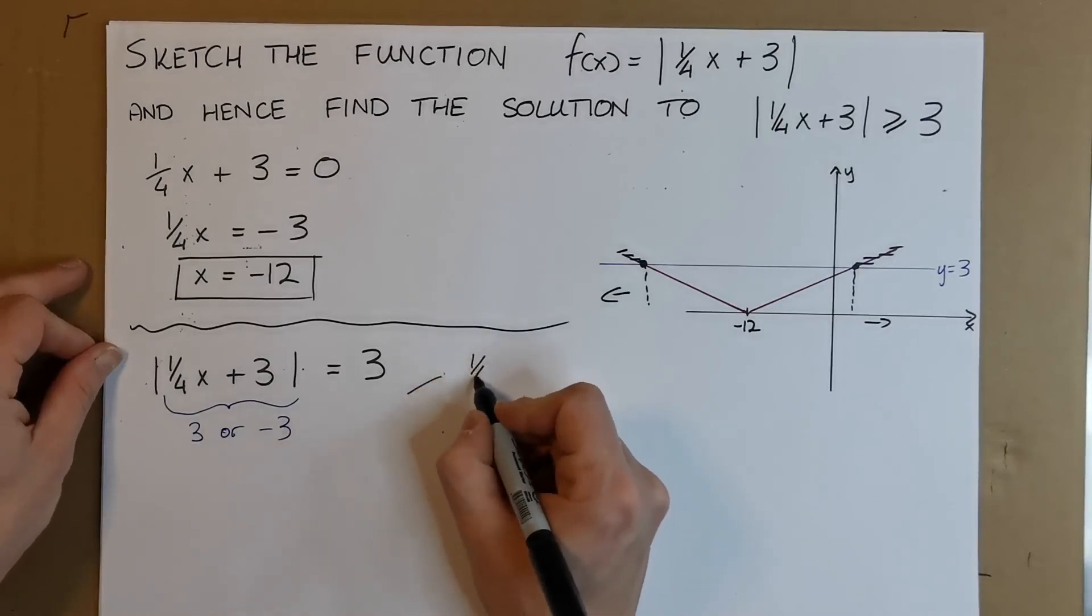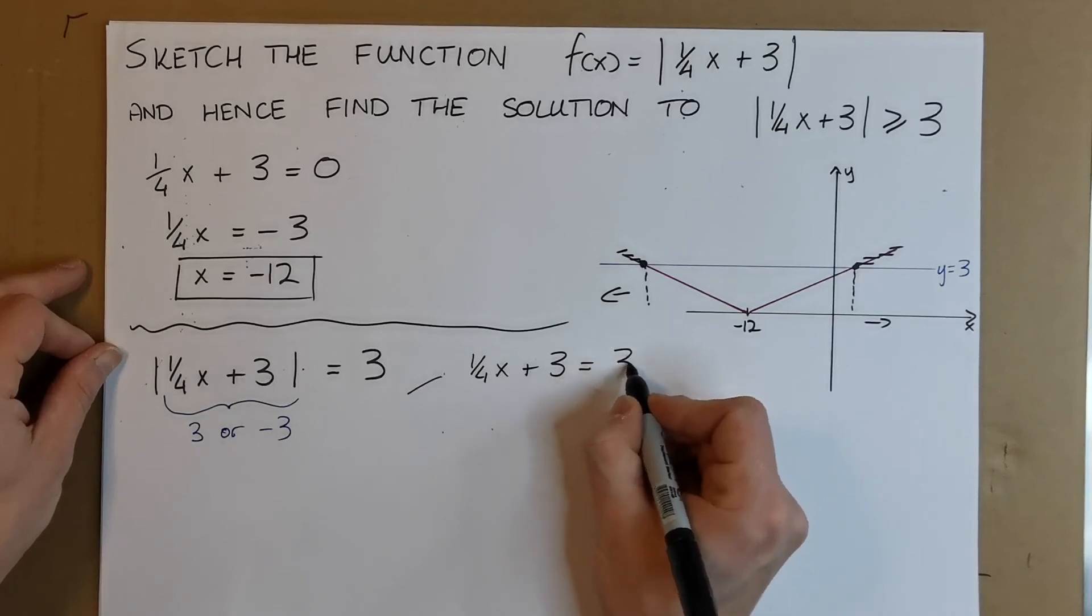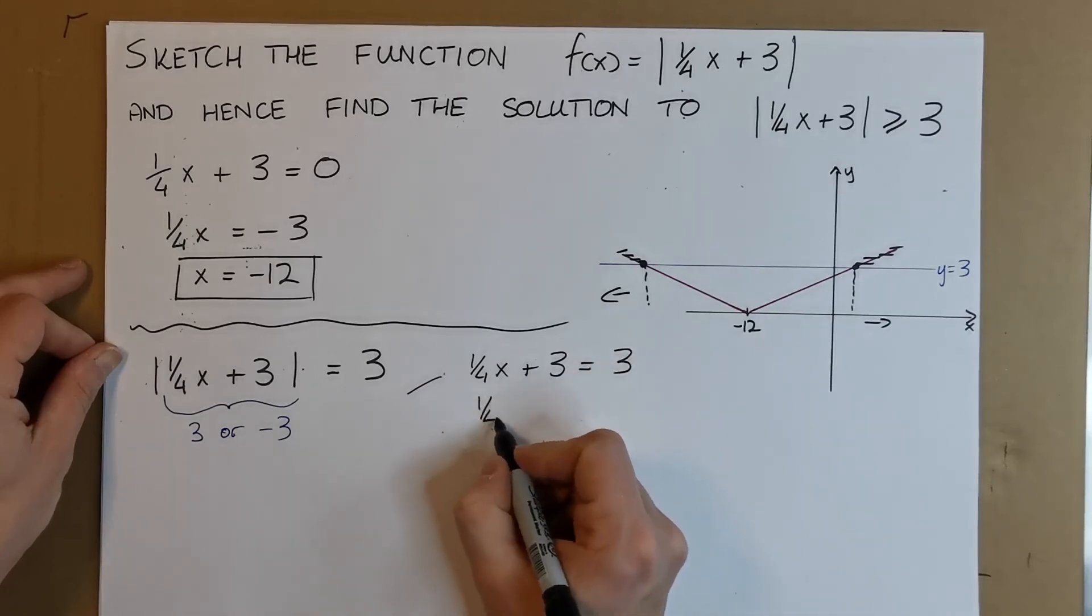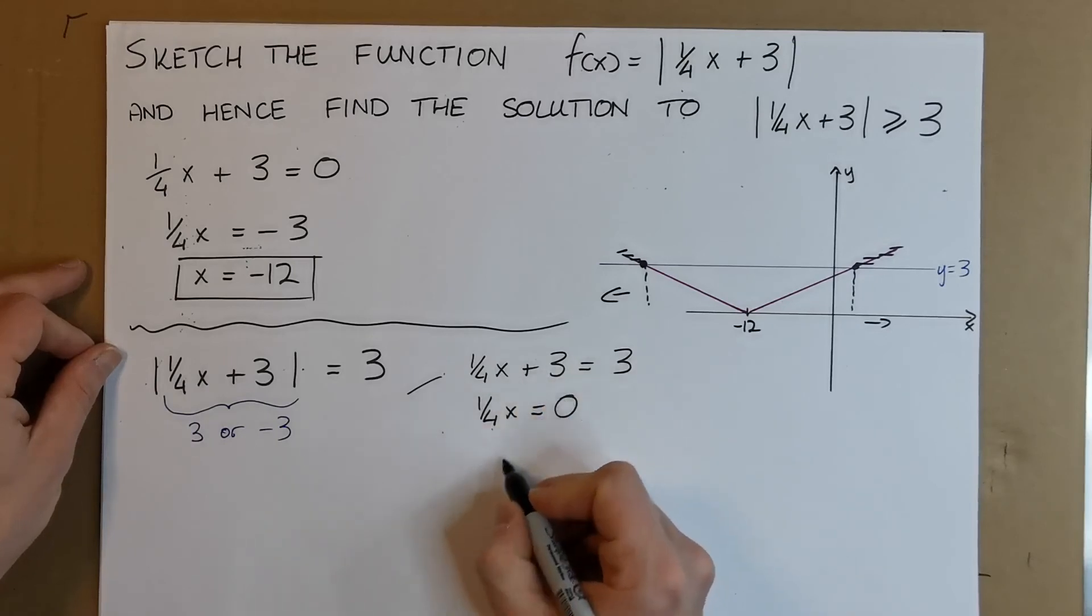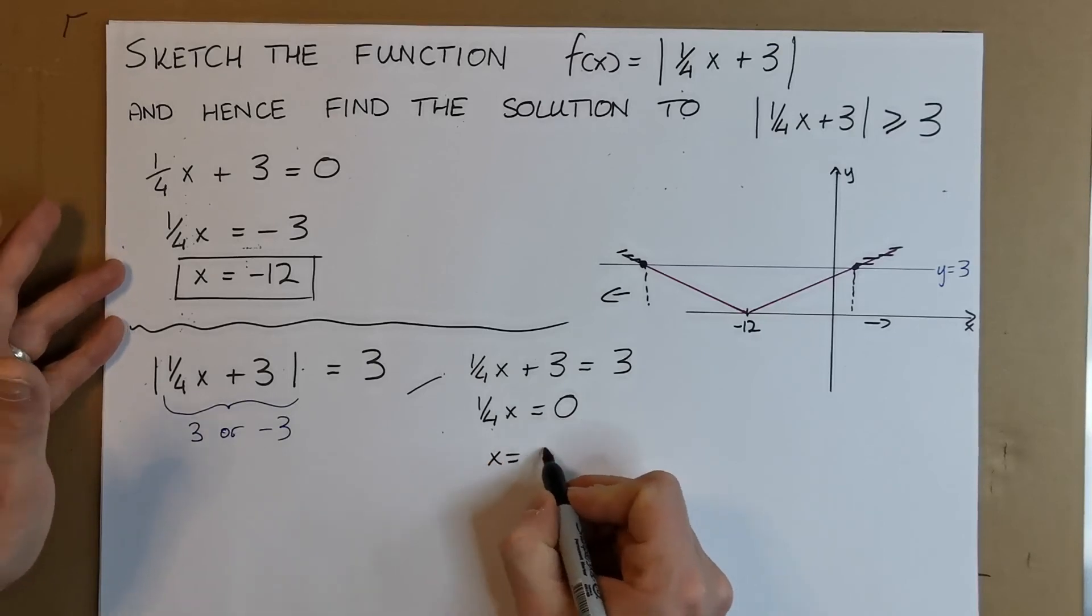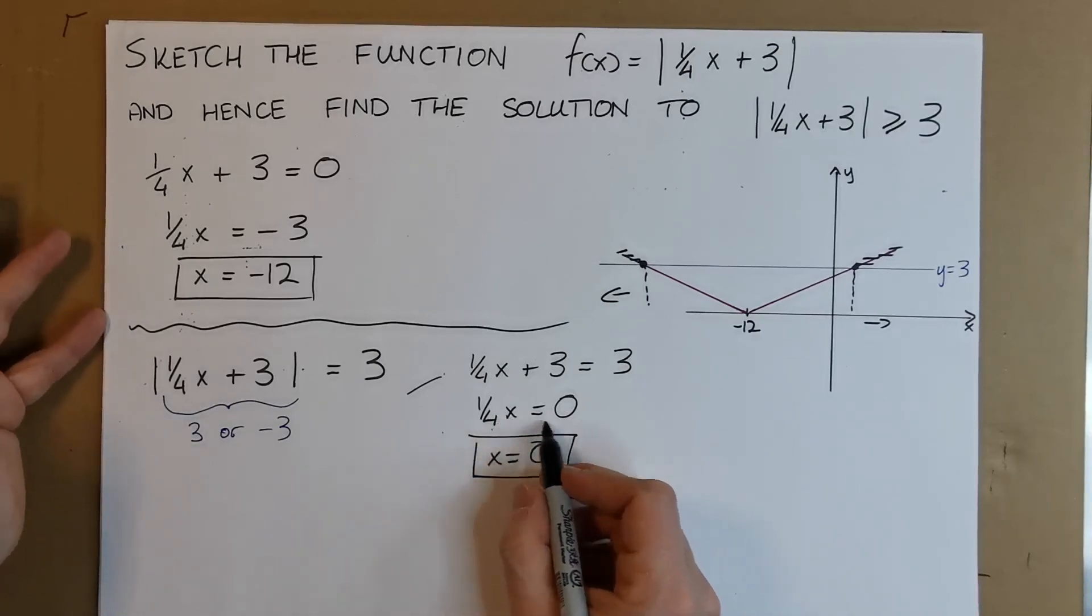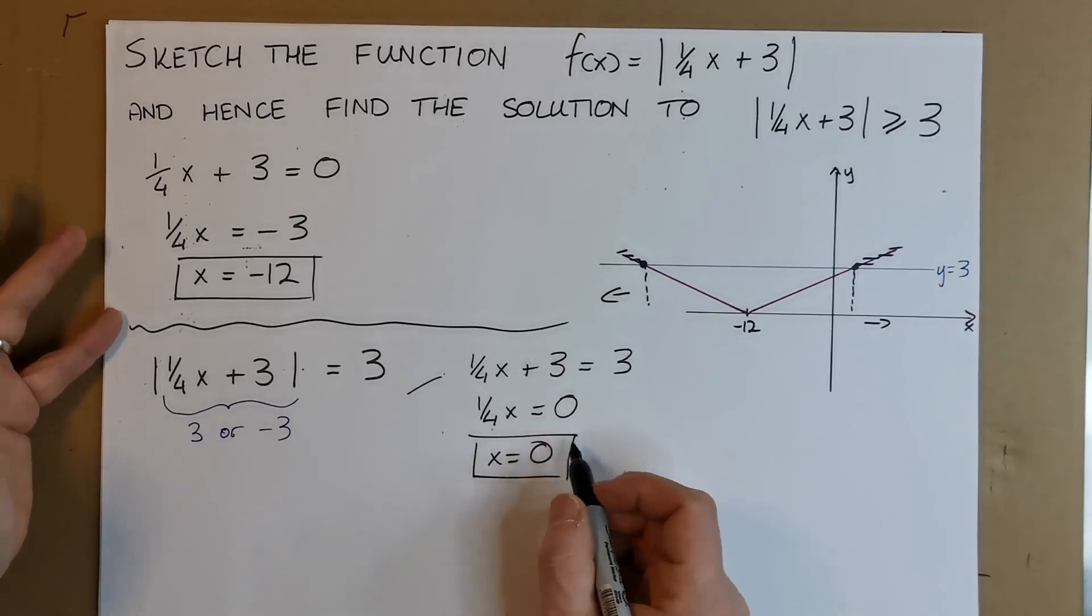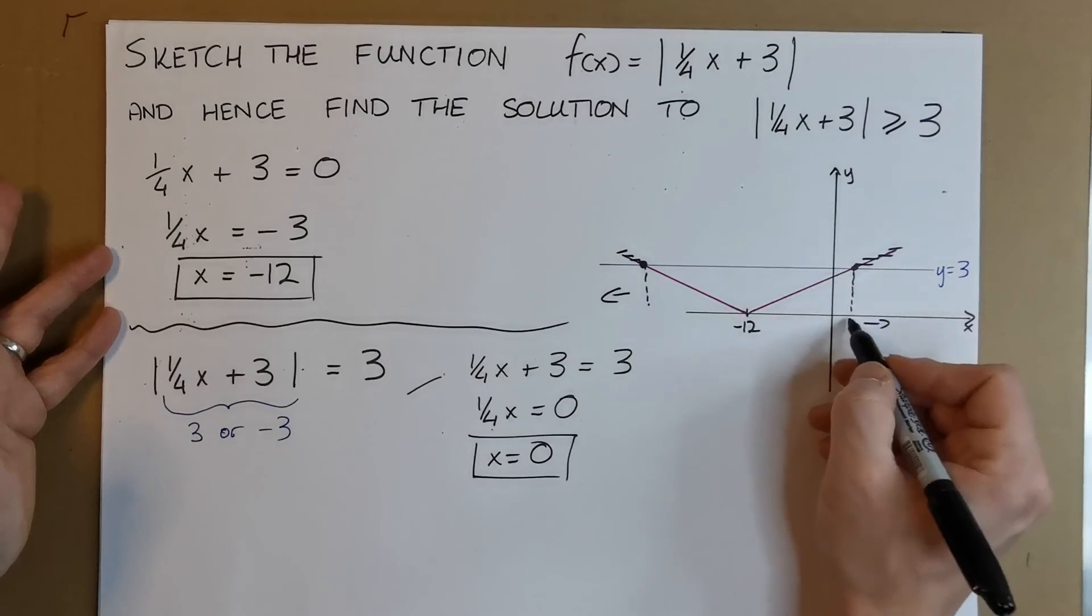First equation: 1/4x + 3 = 3. Rearranging, 3 cancels out, leaving 1/4x = 0. The only way 1/4x equals 0 is if x = 0. Or multiply both sides by 4: 4 times 0 is 0. So x = 0 is one intersection point, right here.